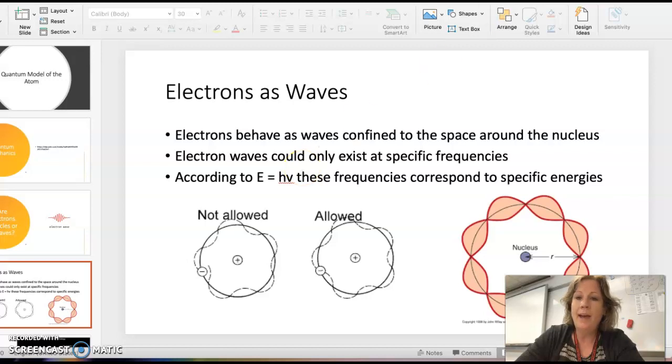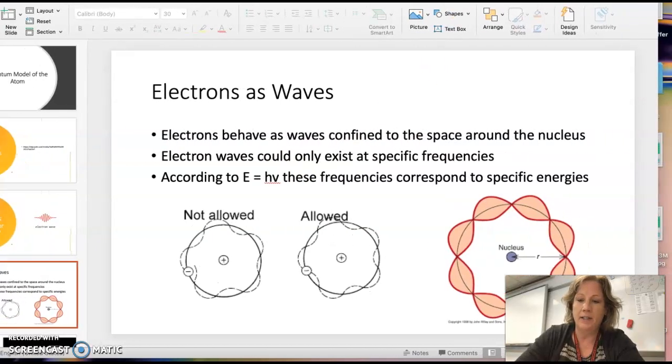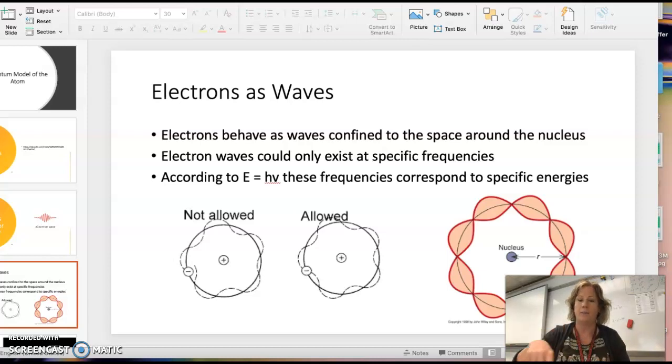When you have a wave, there's something called a standing wave. If you've ever taken a rope tied to a tree or with someone else, and you jiggle it up and down until you get it to the point where it always has the same place where it's high and low, that's what a standing wave is.